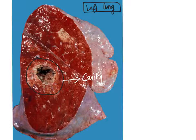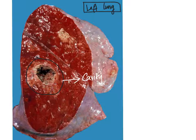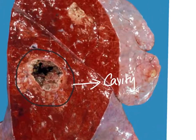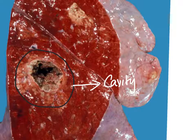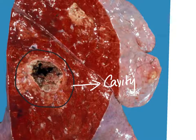A cavity can be seen as an irregular hollow, and in this particular case the edges are slightly irregular. When we look inside the cavity, we can see that there appears to be some brownish, yellowish-brown material. If this were a very fresh specimen, we would be able to appreciate some greenish material, which is indicative grossly of pus or purulent material.